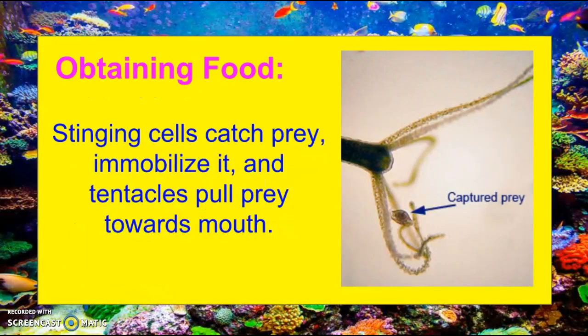When it comes to obtaining food, all cnidarians have stinging cells that catch prey, immobilize it, and tentacles that pull the prey towards the mouth.